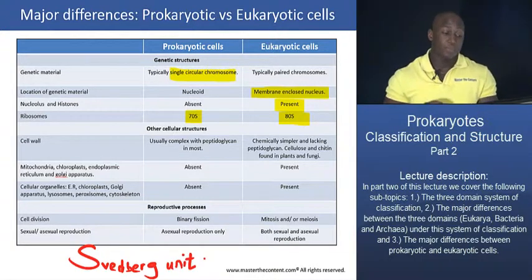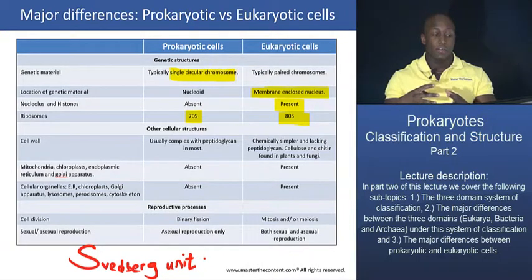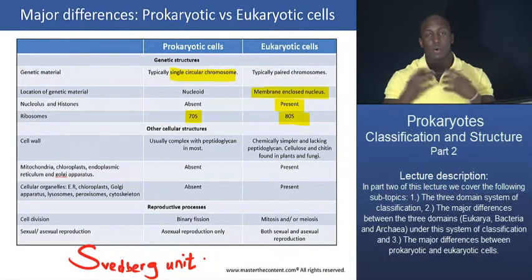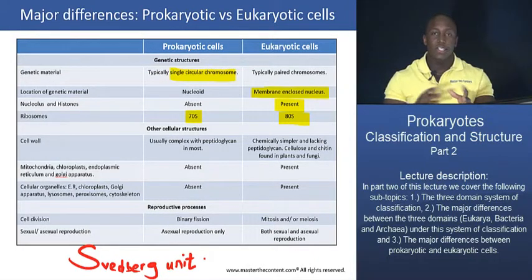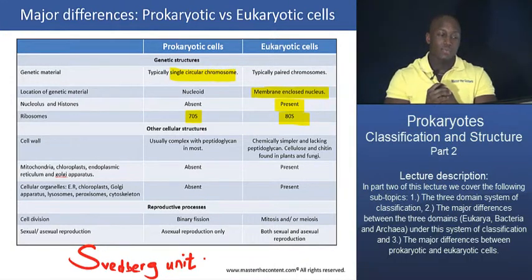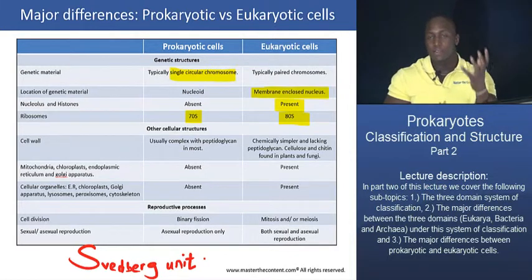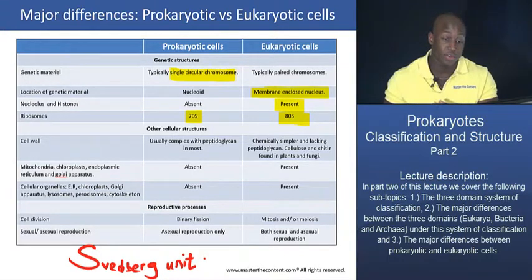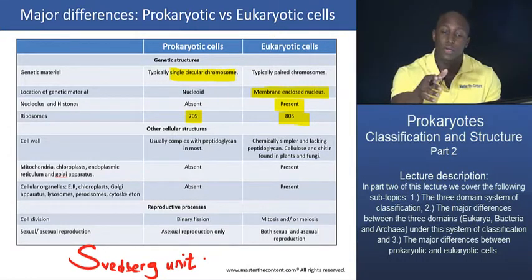The Svedberg unit characterizes the behavior of particles in sedimentation processes — when something settles down in a suspension. The most notable example is centrifugation, where a suspension is spun at high speed causing dissolved substances to sediment to the bottom. So the S value in ribosomal notation is a coefficient indicating how quickly a ribosome sediments when centrifuged. Don't worry too much about that — what you do need to know is that prokaryotic cells have 70S ribosomes and eukaryotic cells have 80S ribosomes.